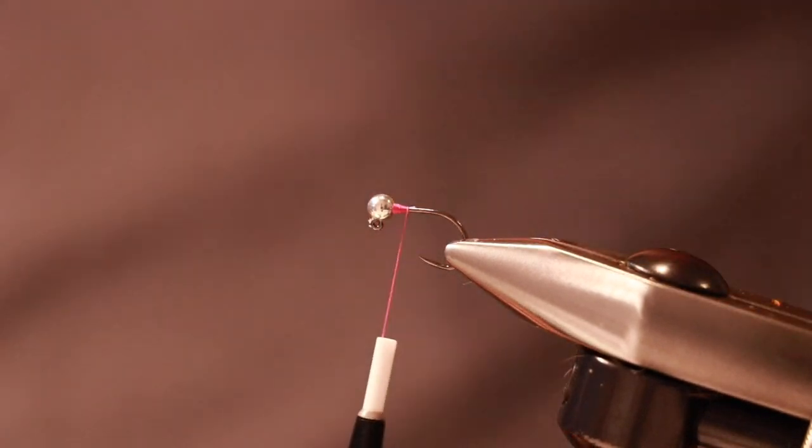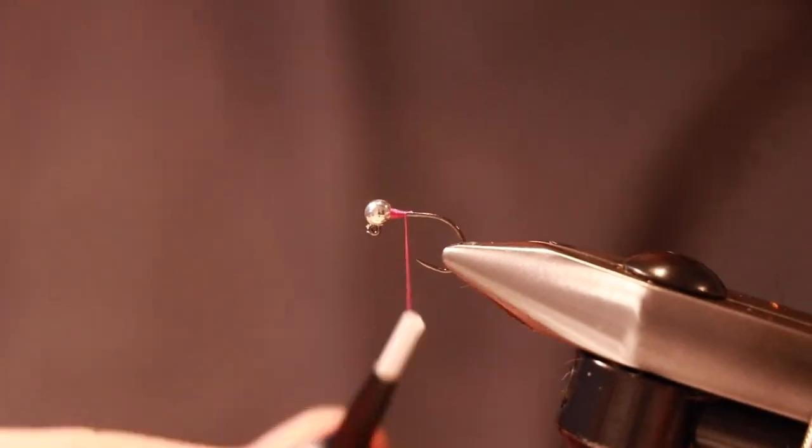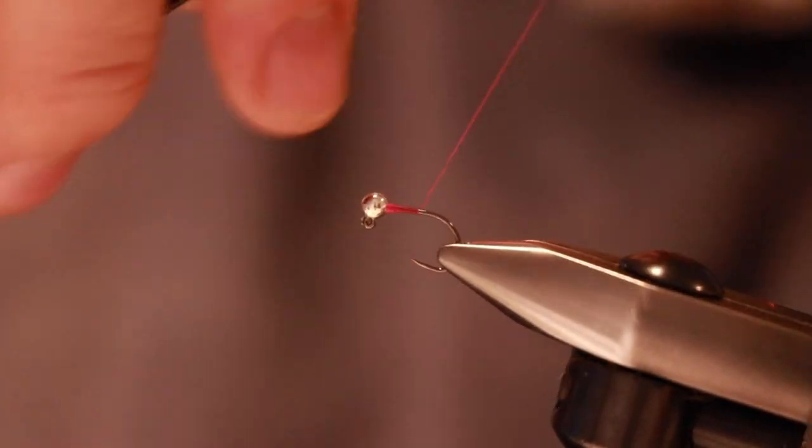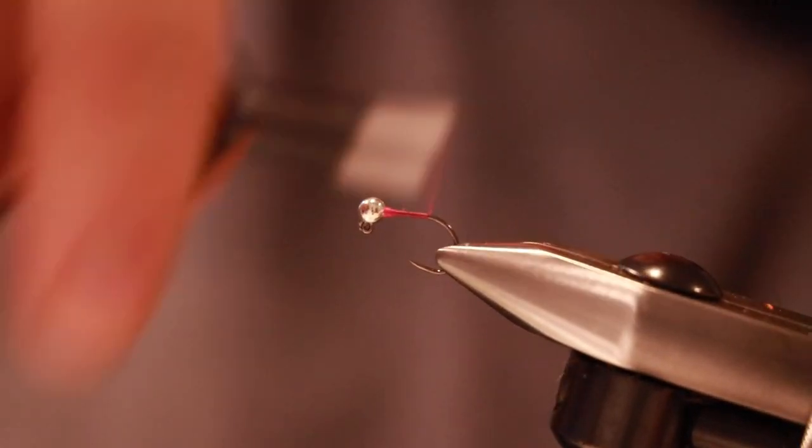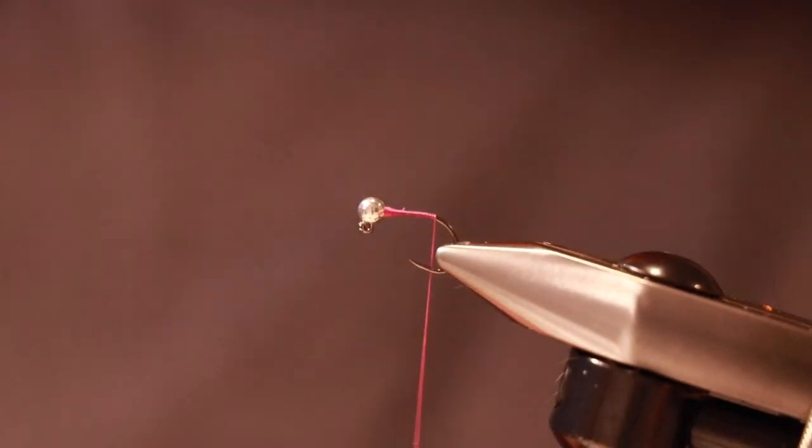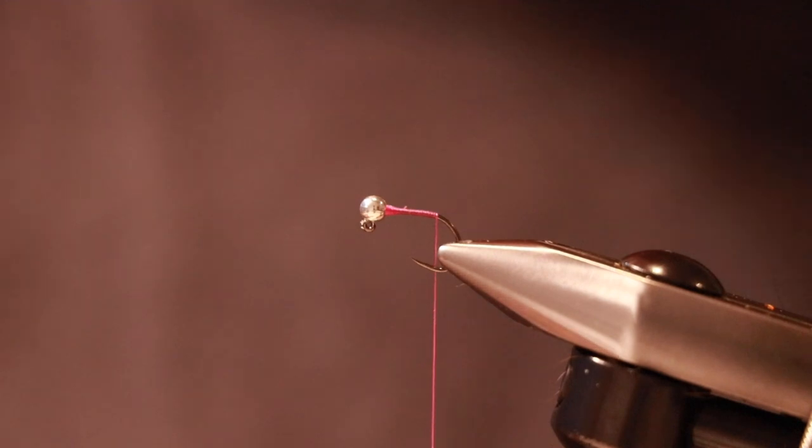Take away that waste piece and then take our thread all the way down to the base. You want to stop just before the hook starts to bend and that will make sure that your tail comes out straight.